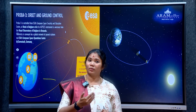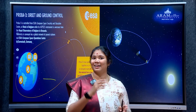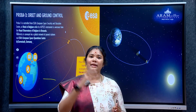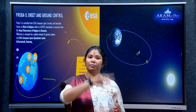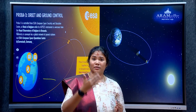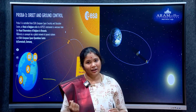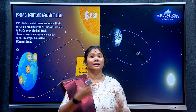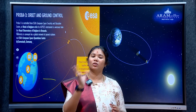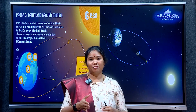Aditya L1 uses the concept of Lagrange points. It is placed at 1.5 million km from Earth toward the Sun. Aditya L1 is in a halo orbit around the L1 Lagrange point. This orbit takes 24 hours. Because it is at the Lagrange point, it requires low fuel consumption to maintain its position observing the Sun.